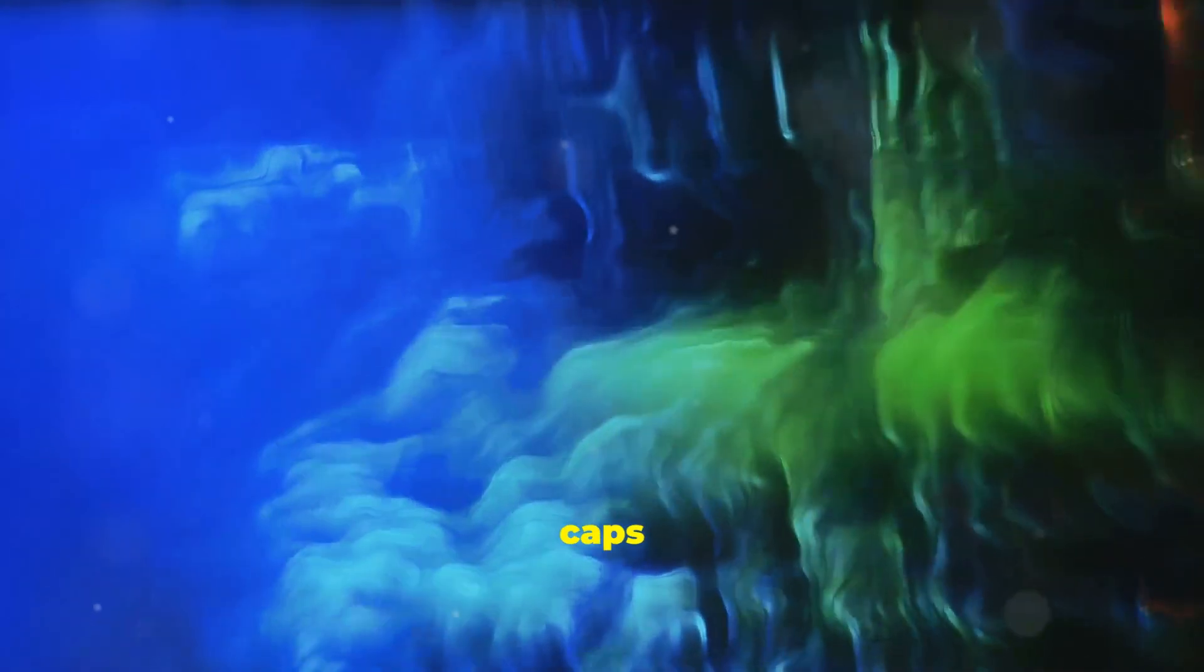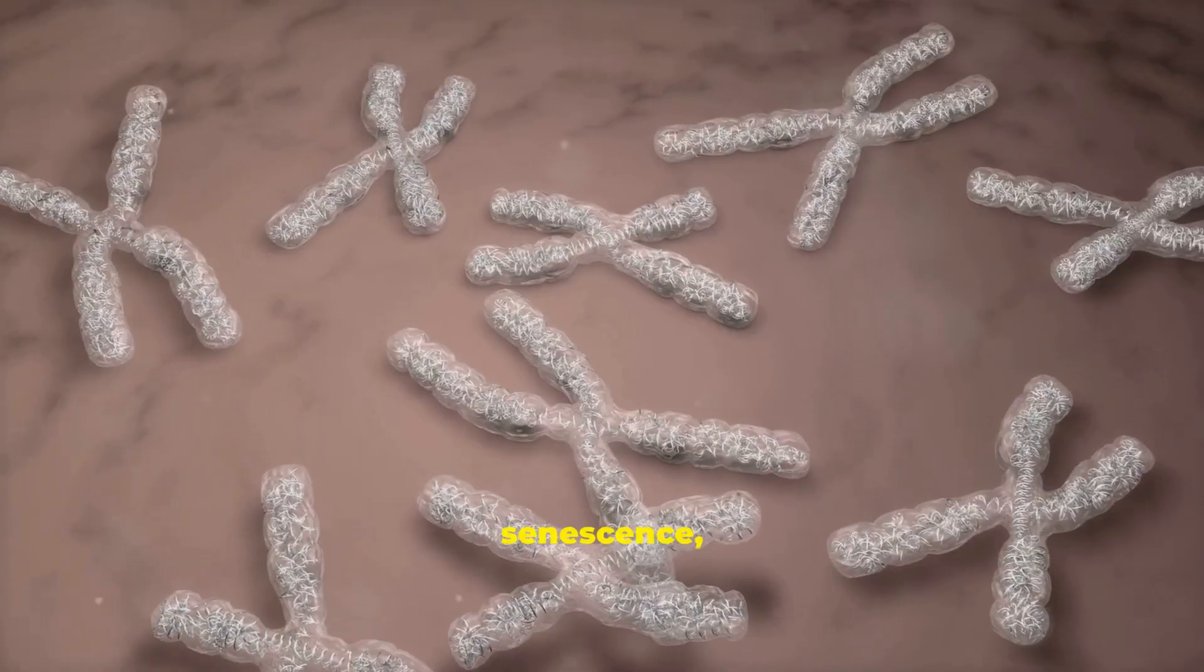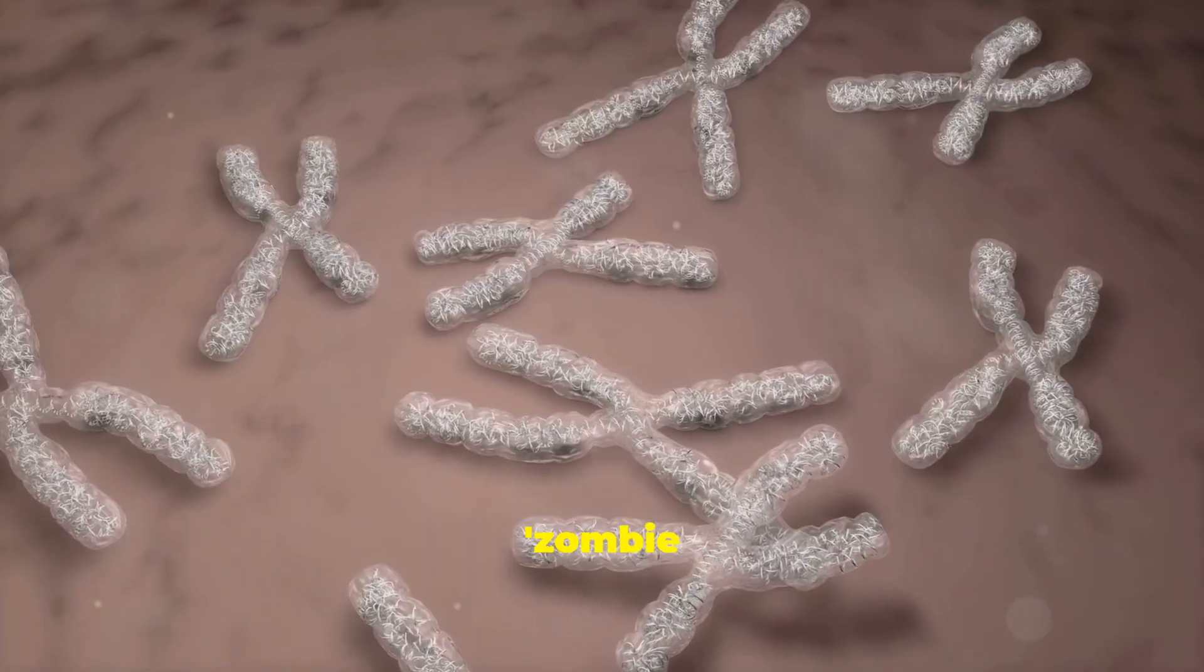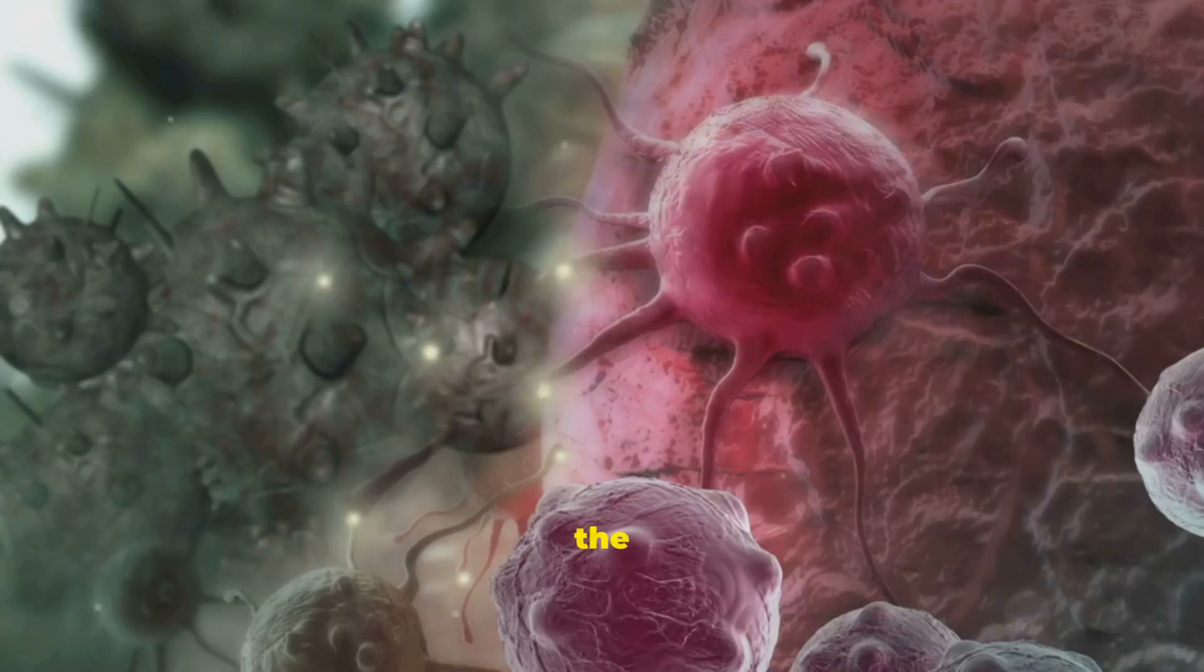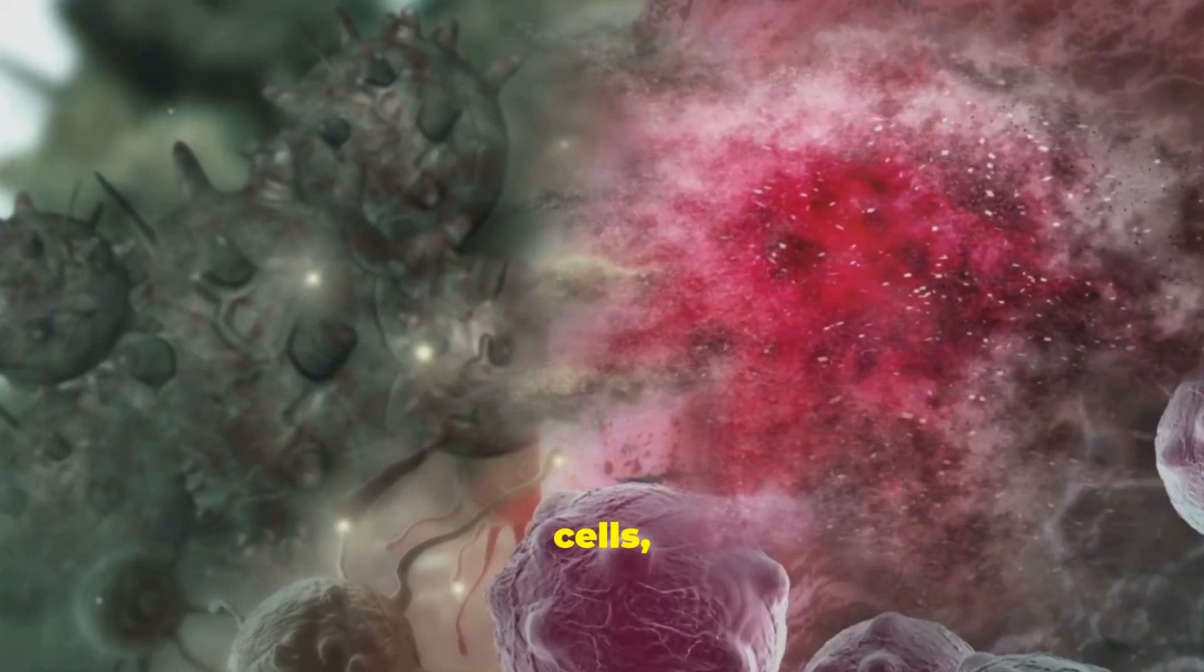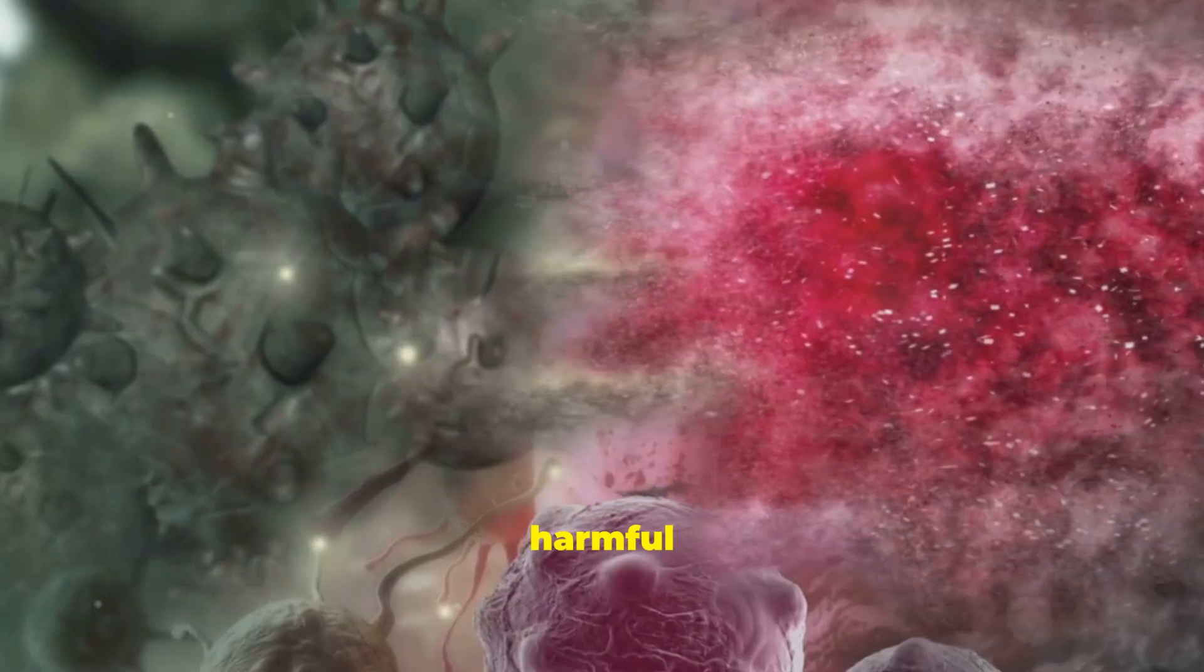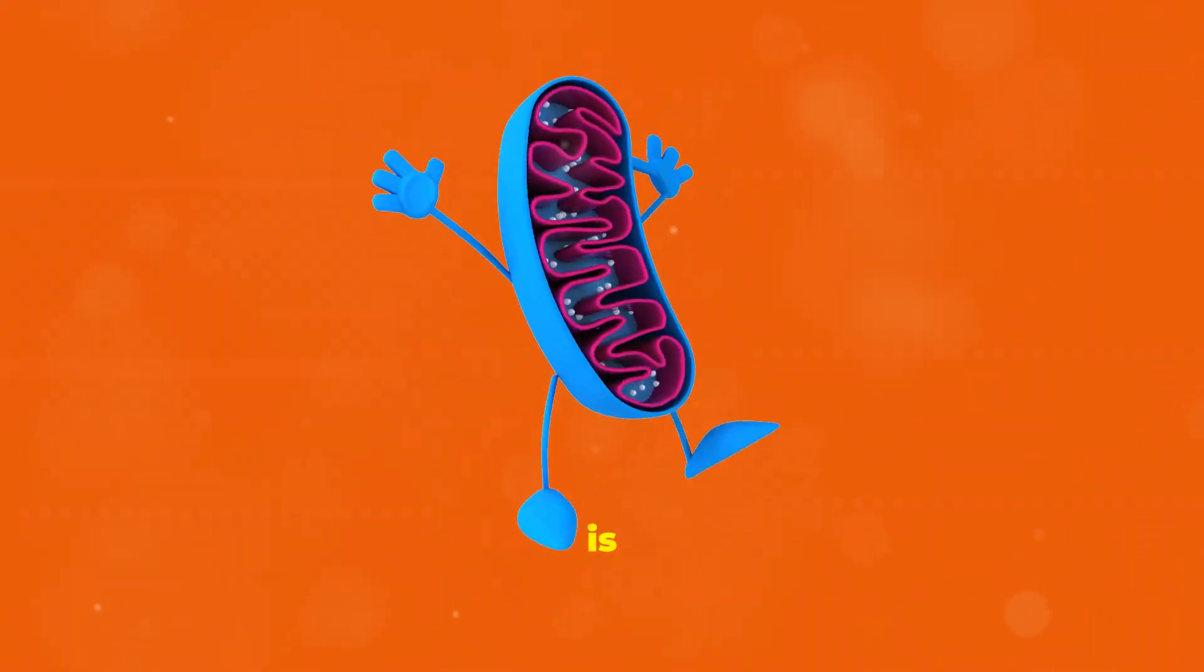They're exploring concepts that sound like science fiction: telomeres, the protective caps on our chromosomes that shorten with each cell division; cellular senescence where cells stop dividing and become zombie cells that can damage surrounding tissue; and the role of mitochondria, the powerhouses of our cells, which can become less efficient and produce harmful by-products over time.